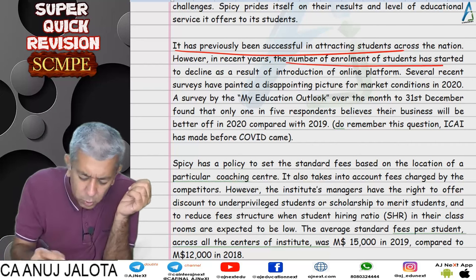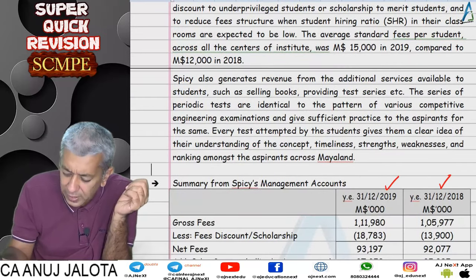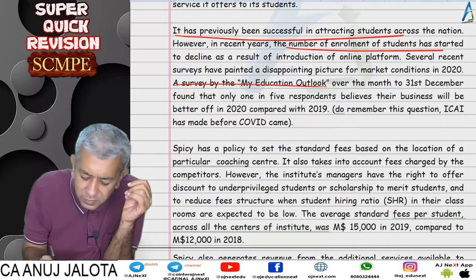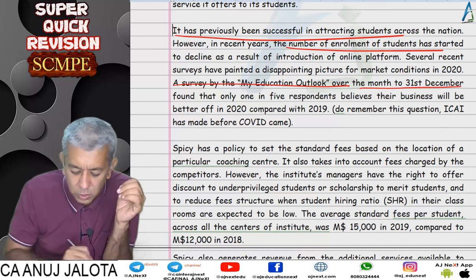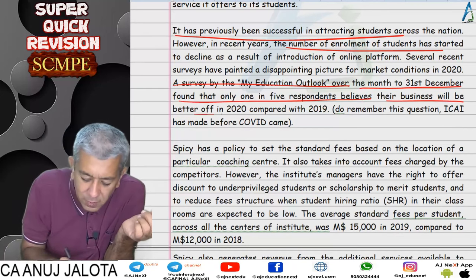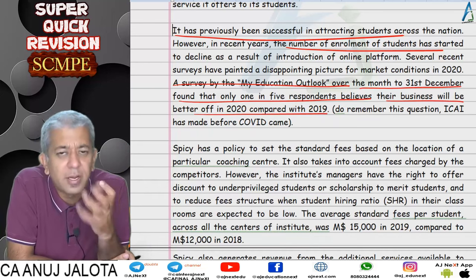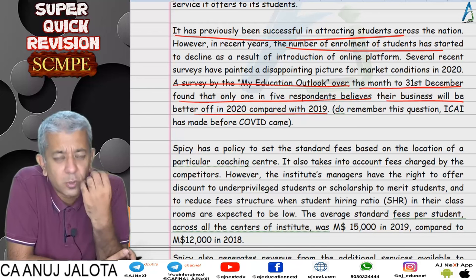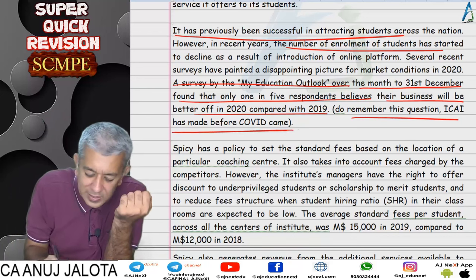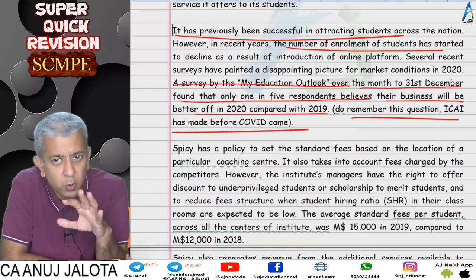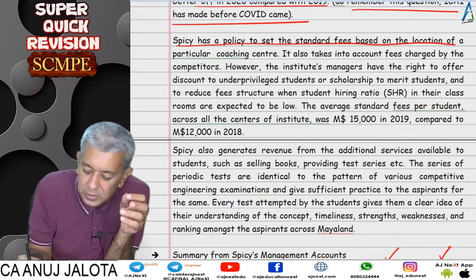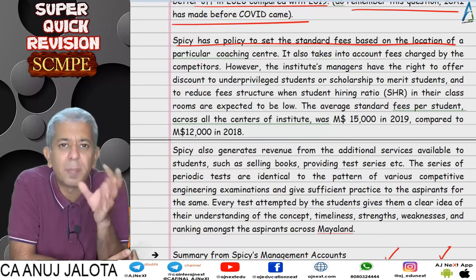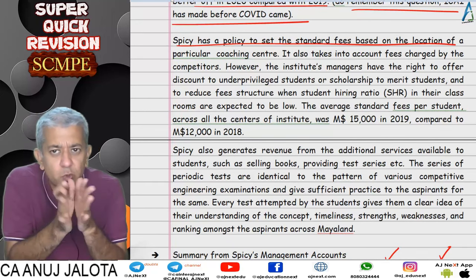Despite being successful in attracting students, in recent years their number of students has been falling consistently. The question covers 2018 and 2019 data. A survey found that only one in five respondents believed their business would be better off in 2020 compared to 2019. The institute has a standard fee structure across all centers, though managers have discretion to offer discounts or scholarships to increase the student hiring ratio. The average standard fee increased from ₹12,000 to ₹15,000.